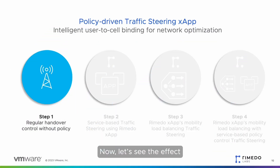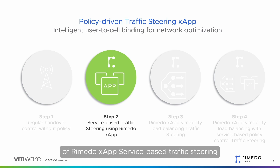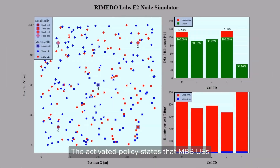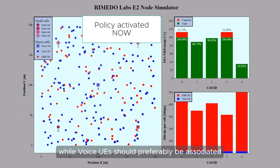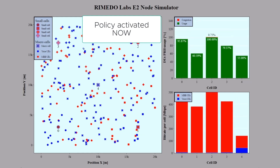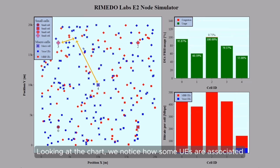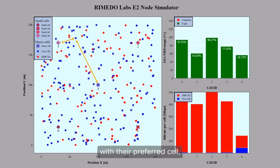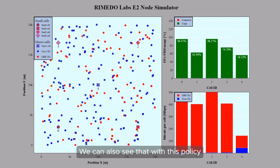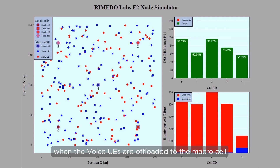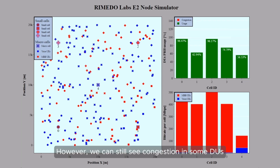Now let's see the effect of Remedo X-App service-based traffic steering. The activated policy states that MBB UEs should preferably be associated with small cells, while voice UEs should preferably be associated with a macro cell. Looking at the chart, we notice how some UEs are associated with their preferred cell, even though they are closer to a different type of cell. We can also see that with this policy, we remove some congestion from the small cells when the voice UEs are offloaded to the macro cell. However, we can still see congestion in some DUs.